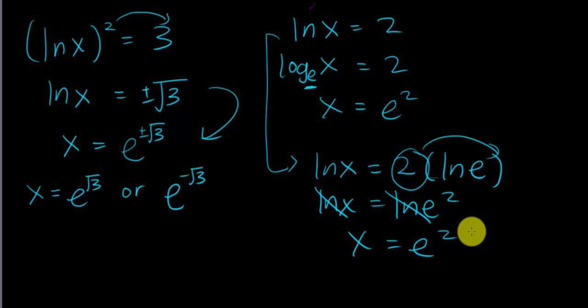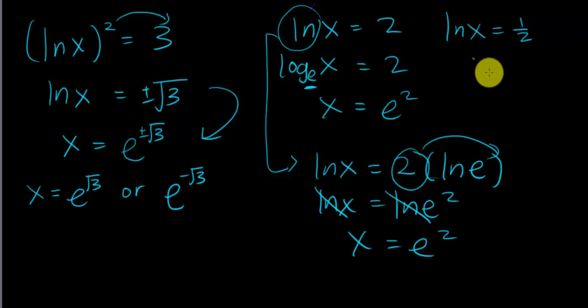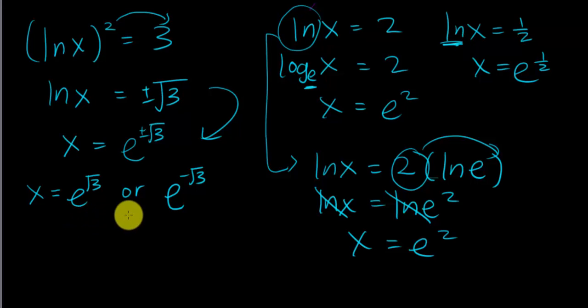This is how I solve ln-type questions — when I see ln on one side, moving it to the other side gives e to the power of something. For example, ln(x) = 1/2 means x = e^(1/2). You can leave answers in terms of e or convert to decimal. If you have more questions about ln or e, let me know on Facebook or YouTube. Thanks for watching!